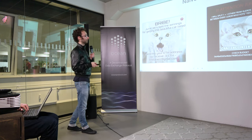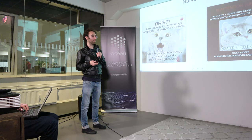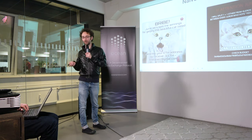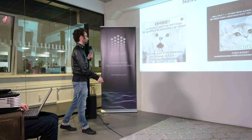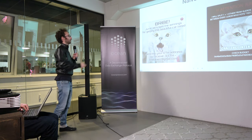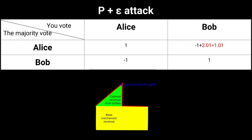People tried quite naive ways to bribe jurors, but in a more complex adversarial setting we may see more sophisticated attacks, including the famous P+epsilon attack.